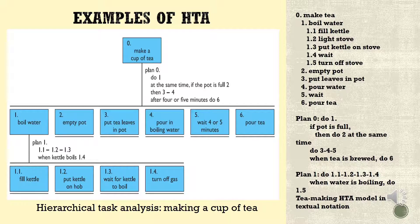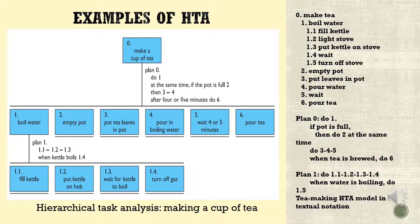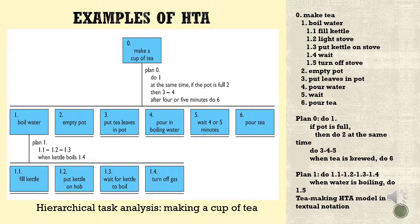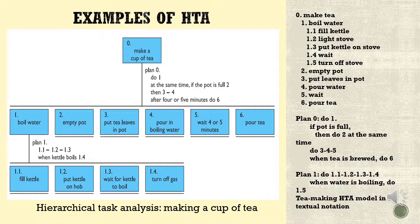The main task is decomposed into six sub-tasks, from plan one to plan six. For plan zero, the main task captures your overall decision. Plan one is about boiling the water — sub-tasks include: plan 1.1 fill kettle, plan 1.2 put kettle on hob, plan 1.3 wait for kettle to boil, and plan 1.4 turn off gas. Plan 1 activates when the kettle boils.